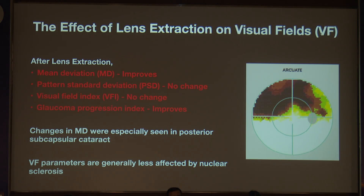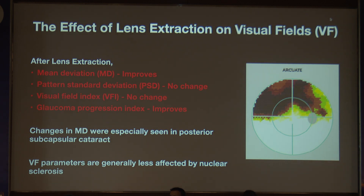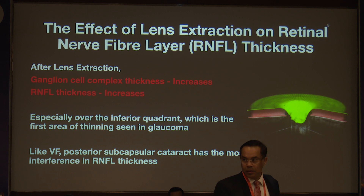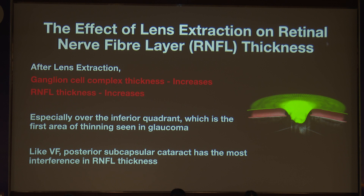Regarding the effect on visual fields after lens extraction: mean deviation improves, pattern standard deviation shows no change, visual field index shows no change, and glaucoma progression index improves. Posterior polar cataract is a culprit where changes in mean deviation can really occur, whereas nuclear cataract parameters are generally less affected. After extraction, ganglion cell layer complex thickness increases and RNFL thickness increases, especially over the inferior quadrant, which is the first area of thinning seen in glaucoma.